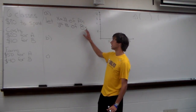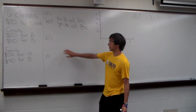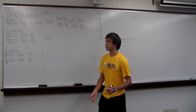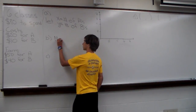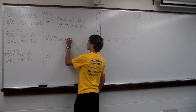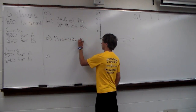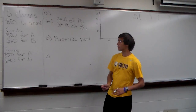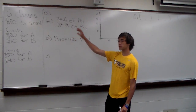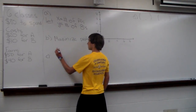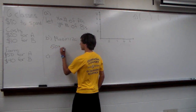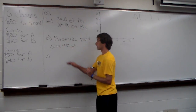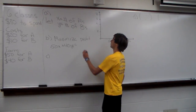That's all we have to do for part A — define our variables. In part B we need to figure out what Henry's goal is. His goal is to make as much money as he can, or to maximize his profit. Using our variables, if he earns $50 for every A plus $40 for every B, we get the profit equation: P = 50X + 40Y.